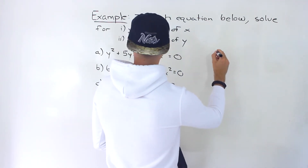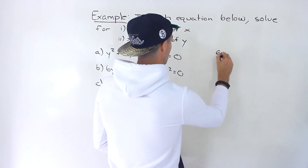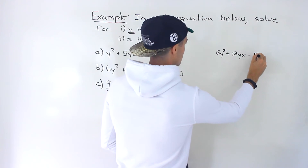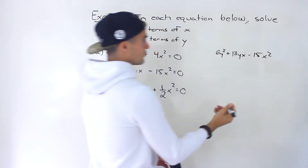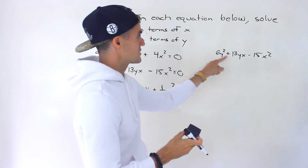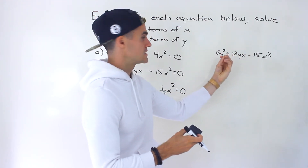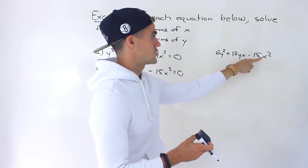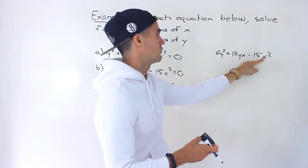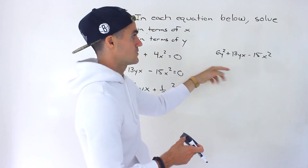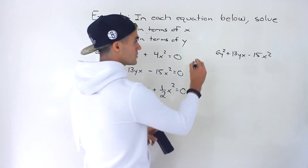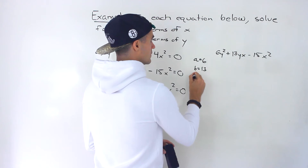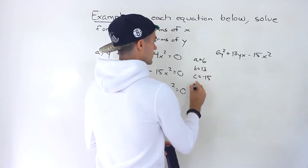For part b we have 6y squared plus 13yx minus 15x squared. First, can we take something out? Between 6, 13, and 15, there's nothing we could take out. In terms of variables, there are y's in some terms but not others, and x's in some terms but not others. So we can't take anything out in terms of variables either. We'll do this by decomposition.